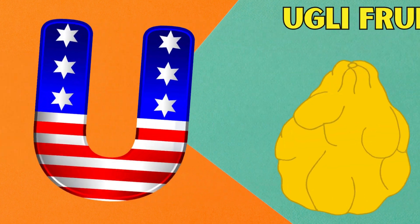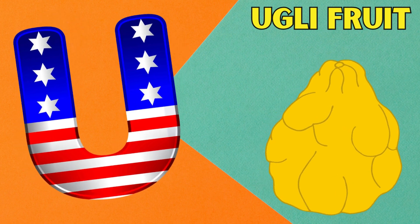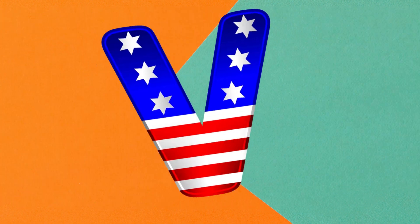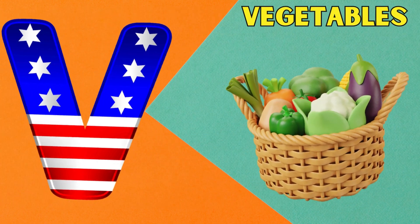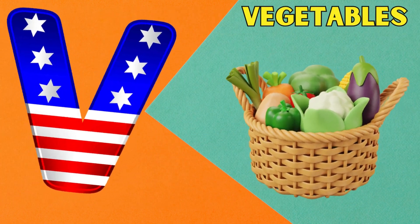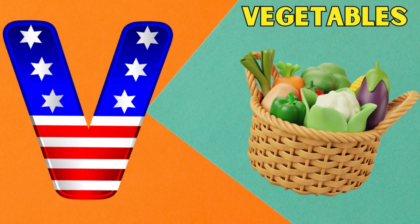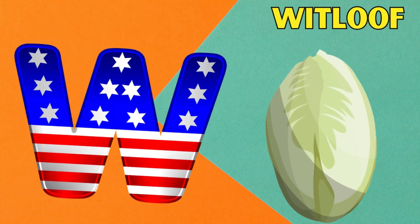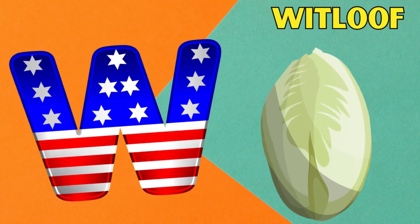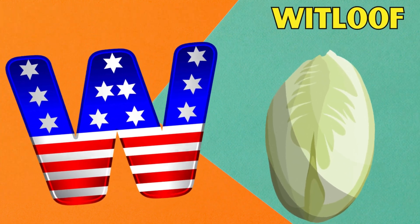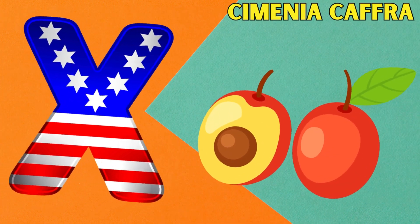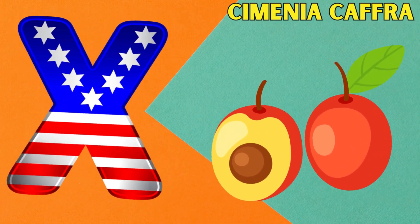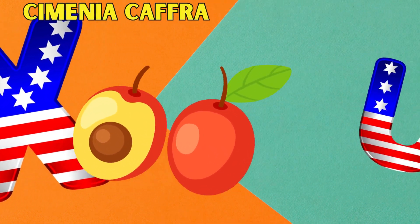U is for ugly fruit — uh, ugly fruit. V is for vegetables — v, vegetables. W is for whitloaf — w, whitloaf. X is for zymenia calf — z, zymenia calf.